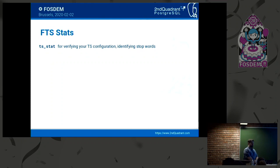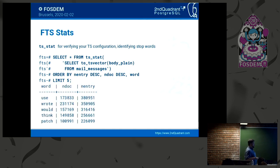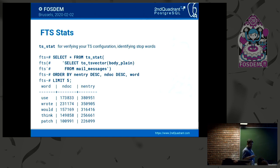Let's look at some statistics. We have the function ts_stat that can be used for verifying that our configuration for text search and dictionaries works fine for our purposes. If we select star from the function ts_stat and pass it a tsvector, it will attempt to find the number of documents, the number of words, etc. It returns, according to my configuration, the top words found in the documents. The most common word was 'use,' then 'wrote,' 'would,' 'think,' 'patch,' and so on — which is something you might expect from the pgsql-hackers mailing list.